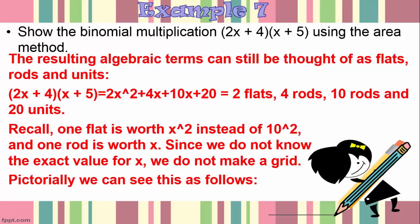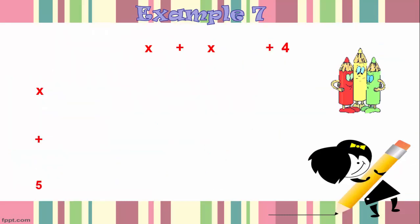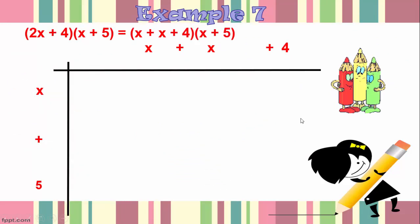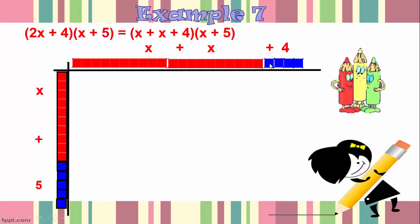Pictorially we can see this as follows. So first we set up the table and notice how I break the 2x into two separate x's here because I'm going to represent each x as a rod and similarly for the x here and then I have the four units plus four here and then the five units plus five here.